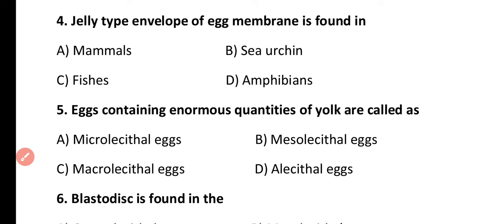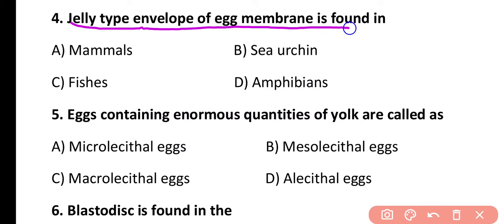Question 4. Jelly-type envelope of egg membrane is found in mammals, sea urchin, fish, or amphibians? The correct answer is option B. Egg jelly is a type of primary egg membrane and it is present in sea urchin, which belongs to echinoderms.